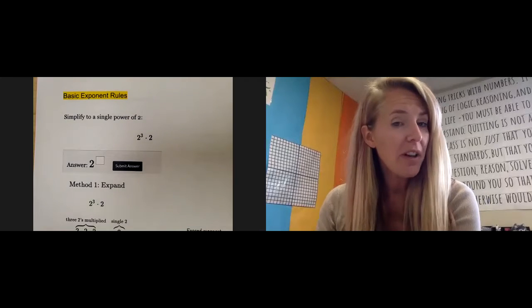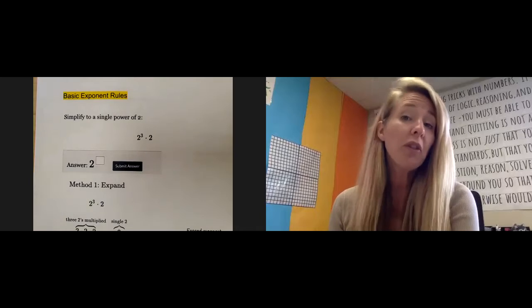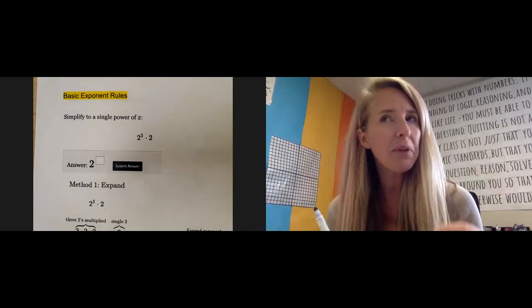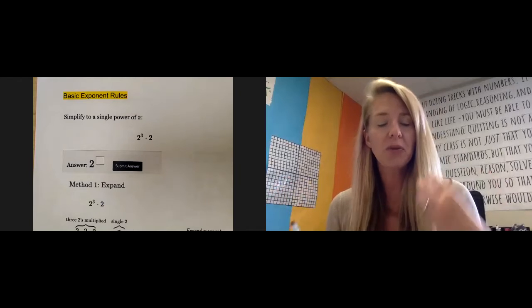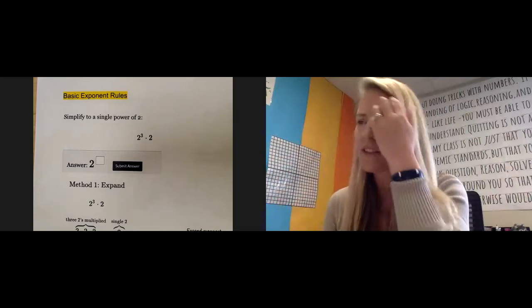When you're doing basic exponent rules on Delta Math, there are a couple different ways that they show you how to do it, two methods. The first method sort of shows you visually what's happening. The second method tends to just show you the shortcut. So it's nice to look at the visual way since that's how we get the second method, that's the shortcut.